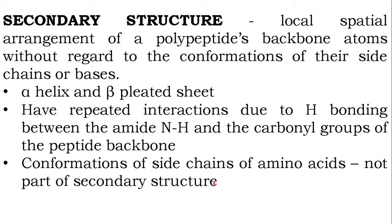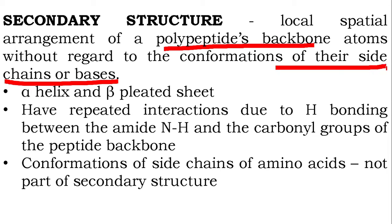That is all about sequencing of polypeptides. Now we are moving on to the secondary structure of proteins — so far we were dealing with the primary structure. The secondary structure is the local spatial arrangement of a polypeptide's backbone without considering the conformations of their side chains. There are two types: alpha helix and beta pleated sheet.